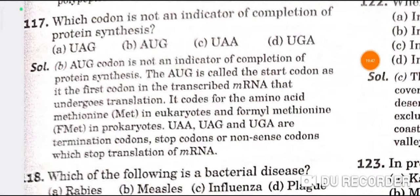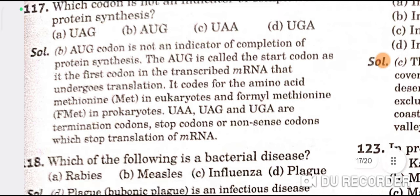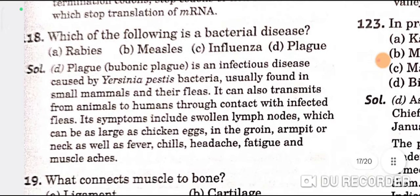Which codon is not an indicator of completion of protein synthesis? AUG — B is the correct option. Which of the following is a bacterial disease? Plague — D is the correct option.